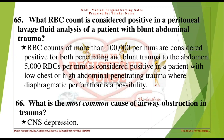What RBC count is considered positive in a peritoneal lavage fluid analysis of a patient with blunt abdominal trauma? RBC counts of more than 100,000 per mm³ are considered positive for both penetrating and blunt trauma to the abdomen. 5,000 RBCs per mm³ is considered positive in a patient with low chest or high abdominal penetrating trauma, where diaphragmatic perforation is a possibility.